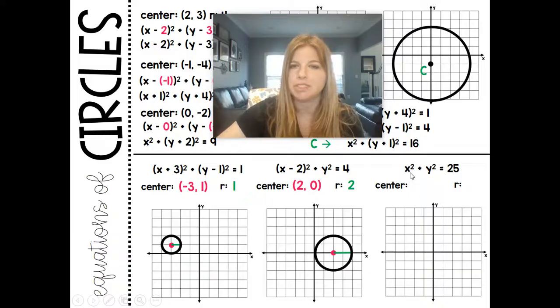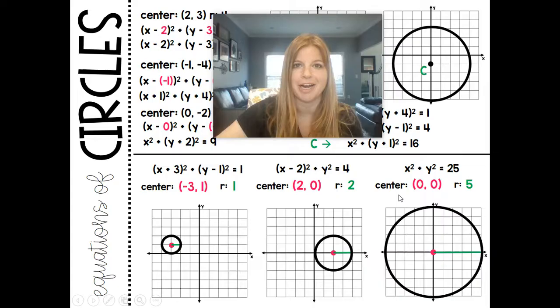And now the last one. If you just see x squared and y squared, it means our center is at 0, 0. Square root of 25 is 5. If I went out a radius of 5 units in all directions, I would have that circle there.